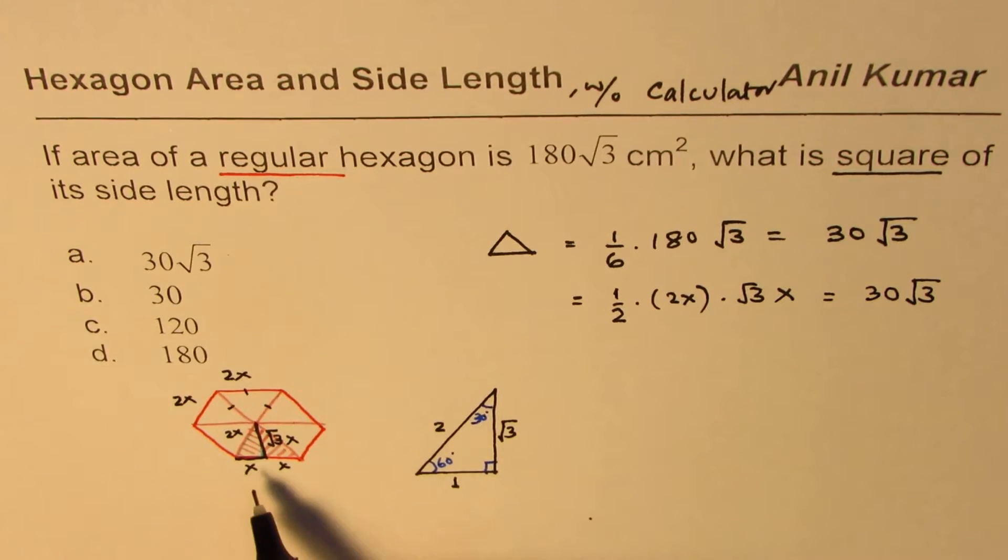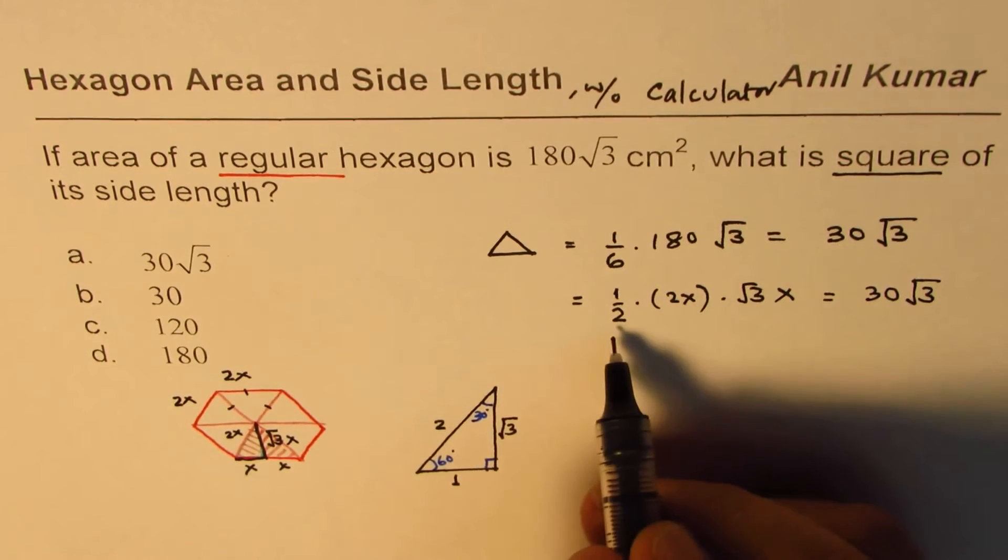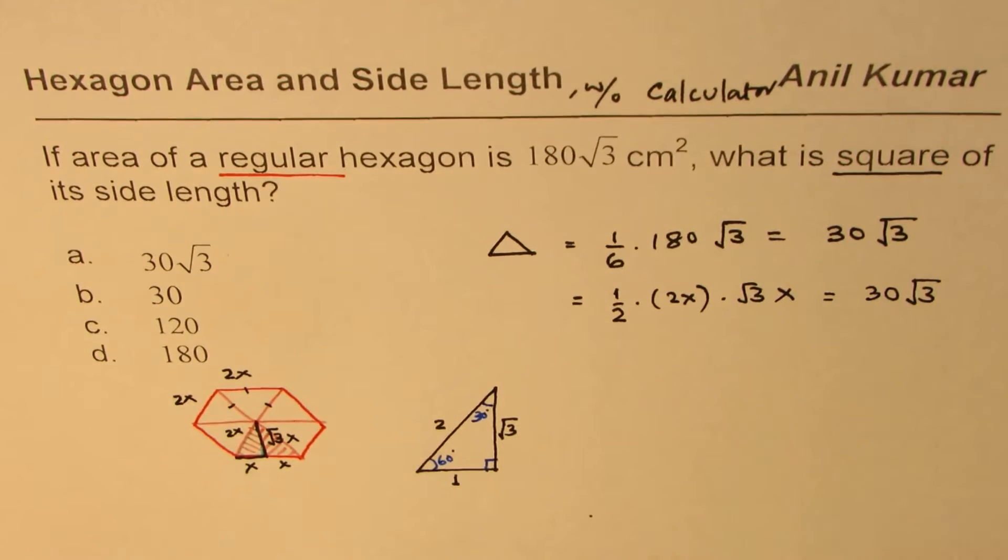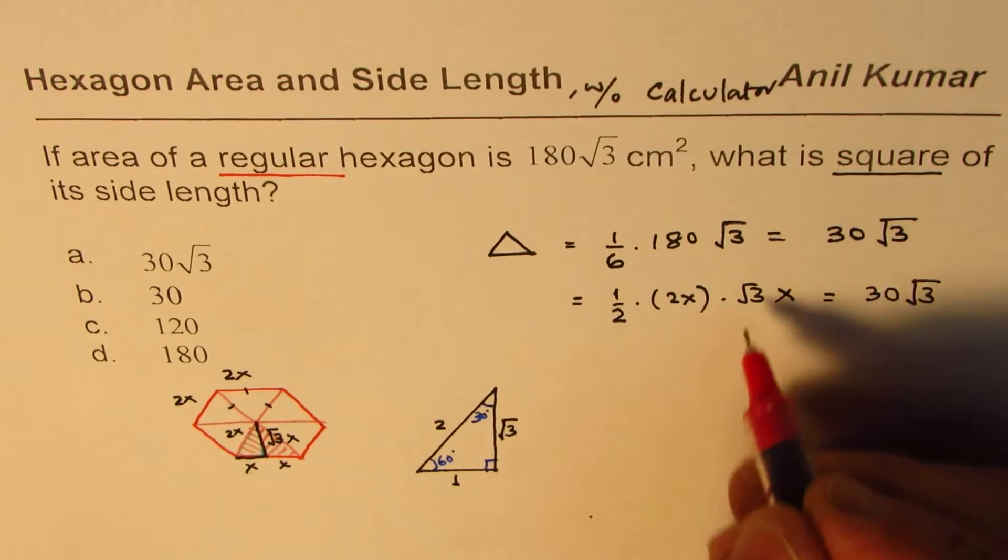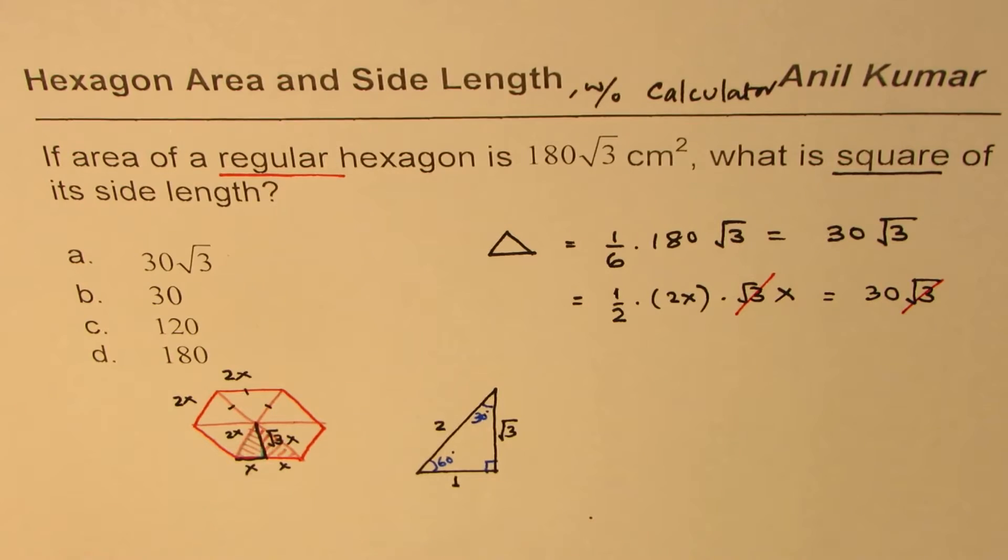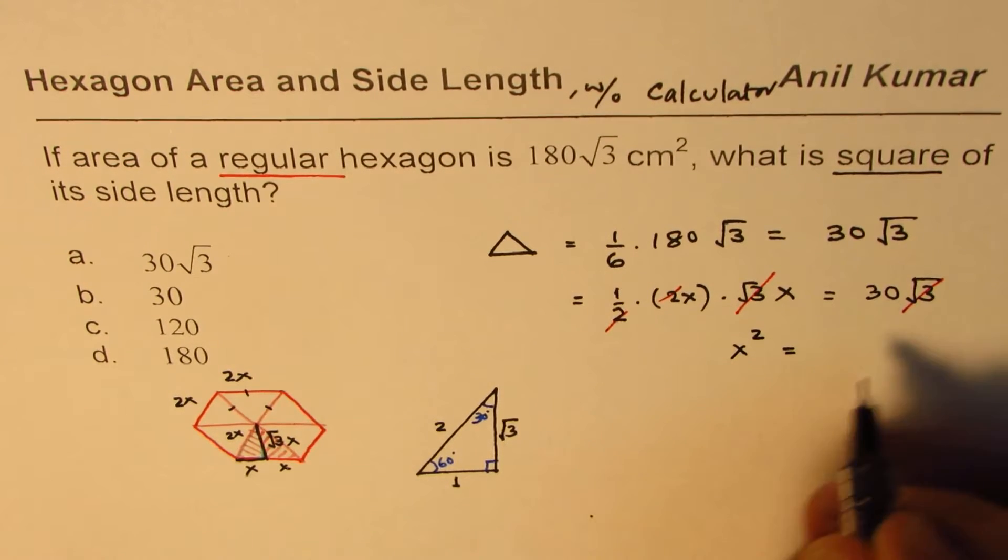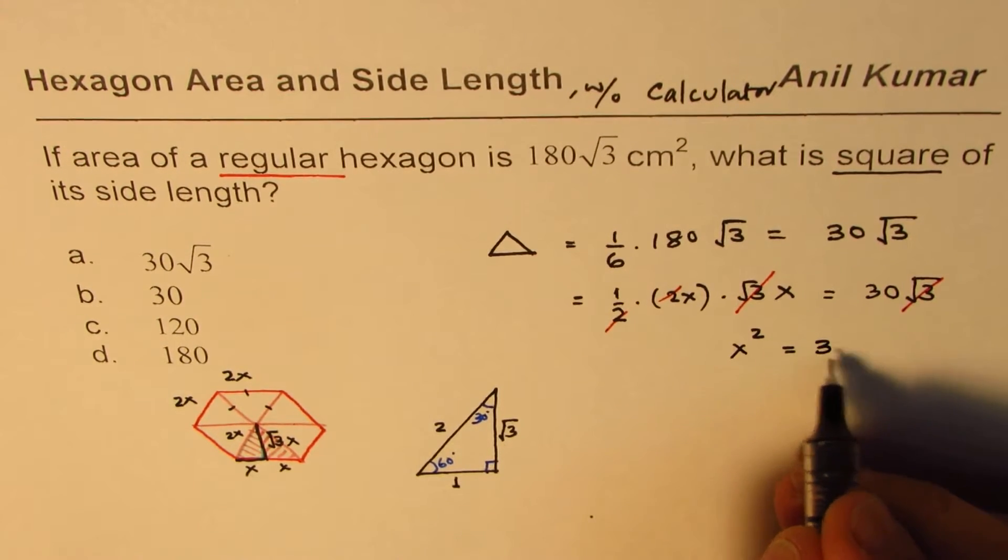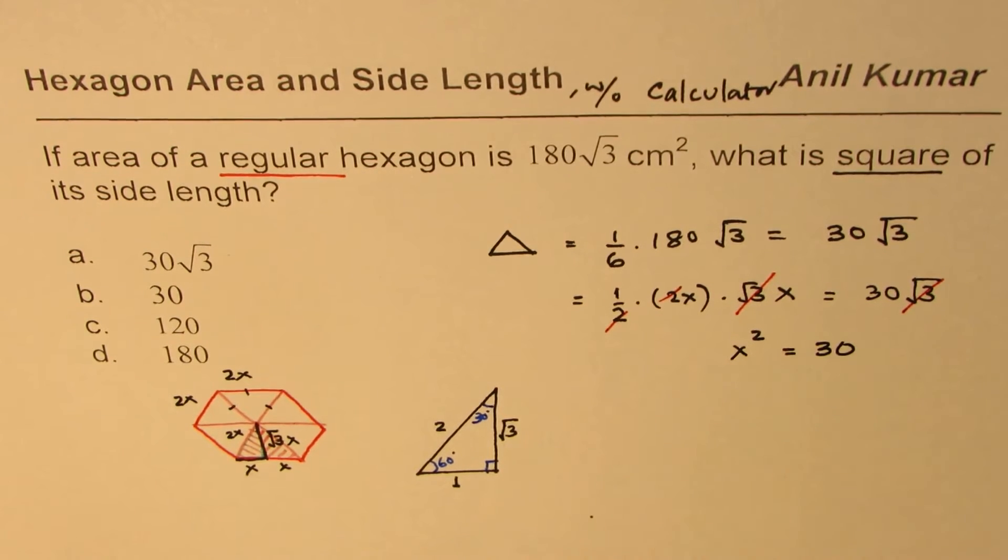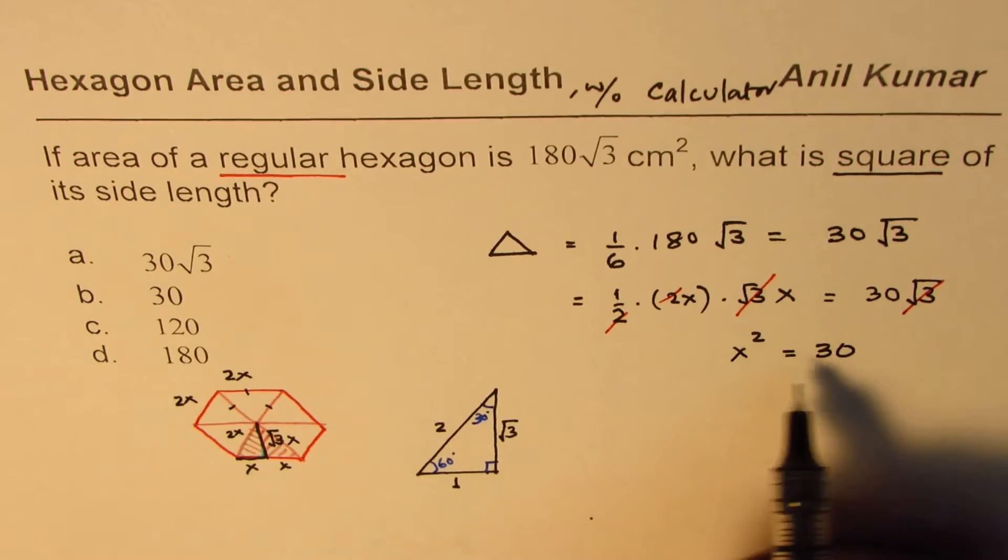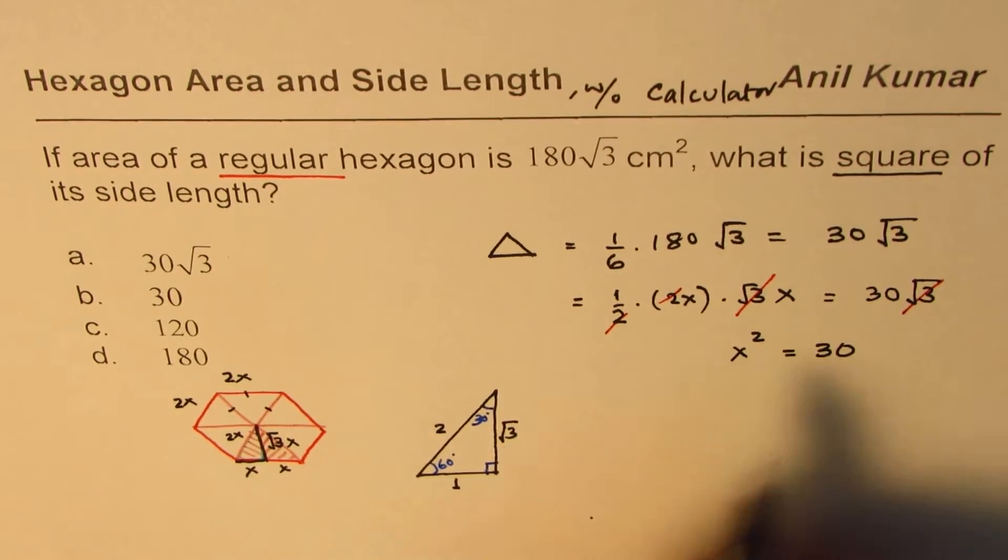This you could simplify. Square root 3 and square root 3 will cancel. And then 2 and 2 also cancel, so we get x squared equals 30.